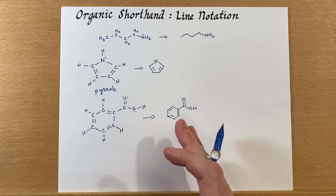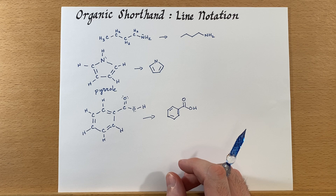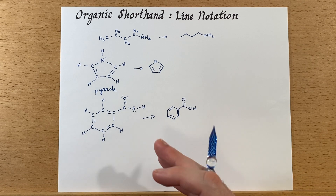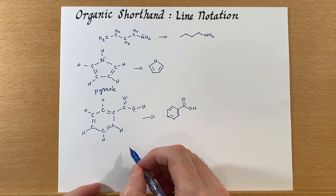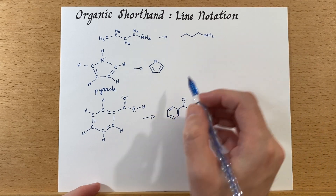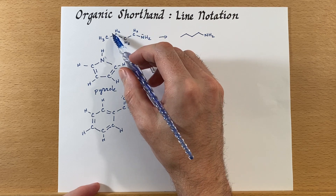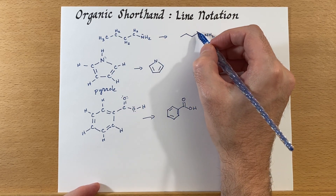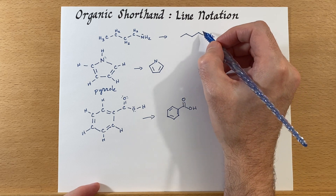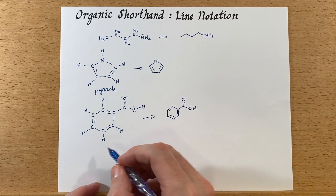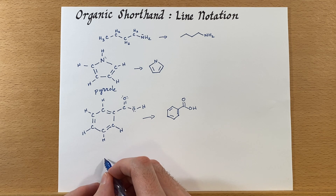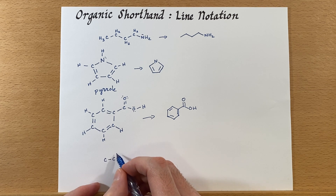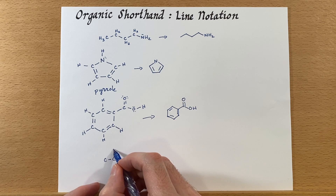Once you get used to line notation, you'll be using it all the time. Sometimes when doing NMR it's really important to know how many hydrogens are on each carbon, so you might want to keep track of it or come up with your own little notation for that. We'll talk about that later, but for the most part you'll be using line notation.